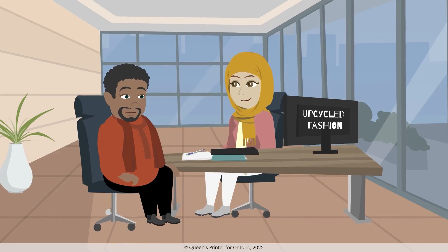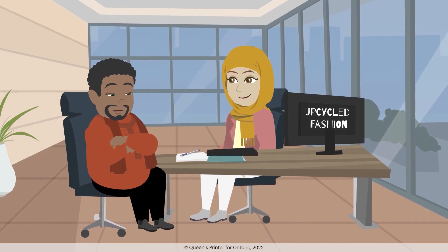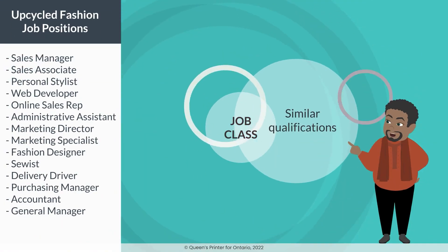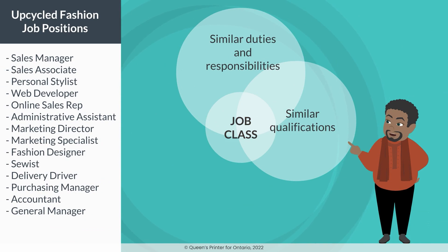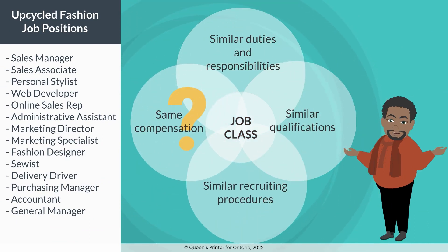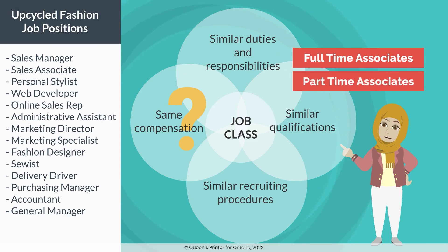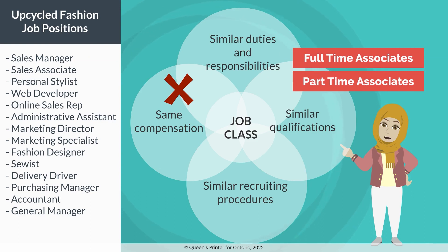So, would it make sense to group together all of our sales employees and label it the sales job class? They all have similar skills, do exactly the same work, and we hire them all from the same employment service. And they're paid roughly the same, right? They do perform similar work, but our full-time sales associates have benefits, whereas our part-time sales associates do not. That means we have two different job classes for our sales team — one for part-time associates and another for full-time associates.